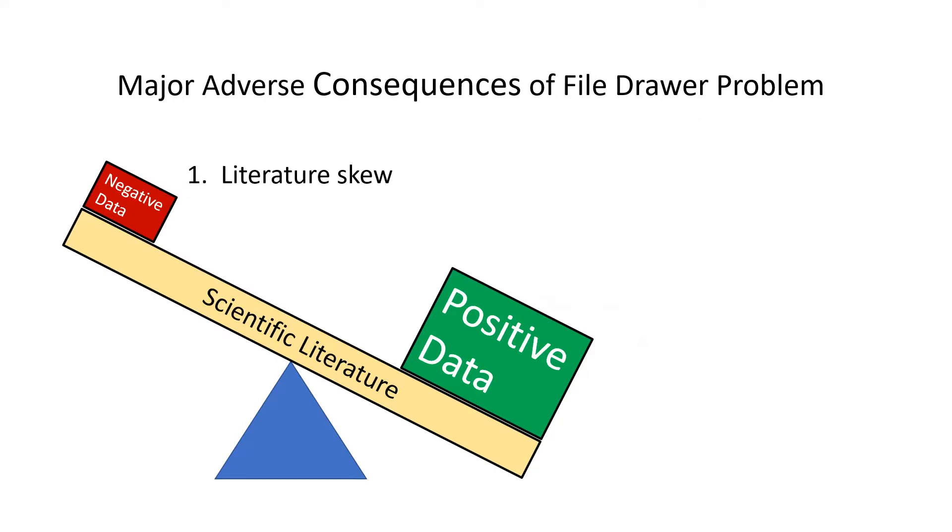There are several major adverse consequences of the file drawer problem. The first and most obvious is that it causes a serious skew in the literature. Positive data are heavily overrepresented with respect to negative data. And this is especially unfortunate because if anything, positive data are probably less commonly obtained in ordinary research work than negative data.